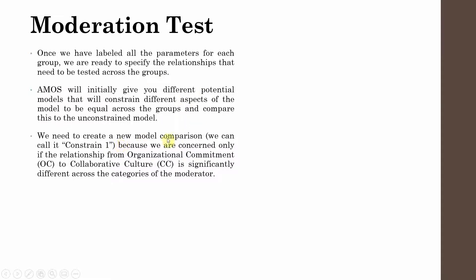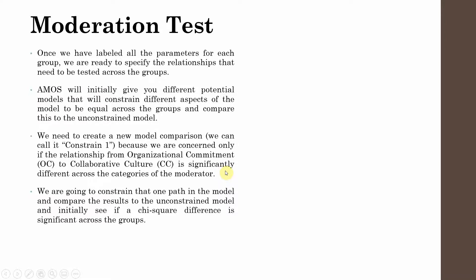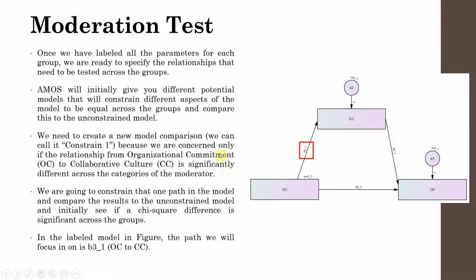AMOS will initially provide different potential models that constrain different aspects of the model to be equal across groups — this is what we do in multi-group analysis. We need to constrain one relationship in order to assess whether that relationship differs between the groups. Looking at our model, the relationship we are going to constrain is labeled b1_1 for one group and b1_2 for the other group.